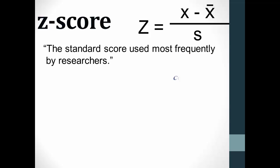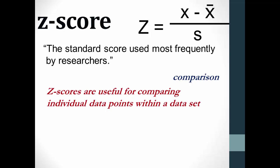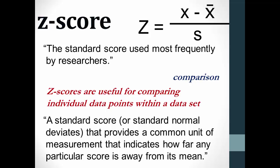Z-scores are useful for comparison purposes. They allow for comparisons of individual data points within a data set. The second definition is a little more enlightening: a standard score or standard normal deviate that provides a common unit of measurement that indicates how far a particular score is away from its mean. The z-score is sometimes called the standard score.